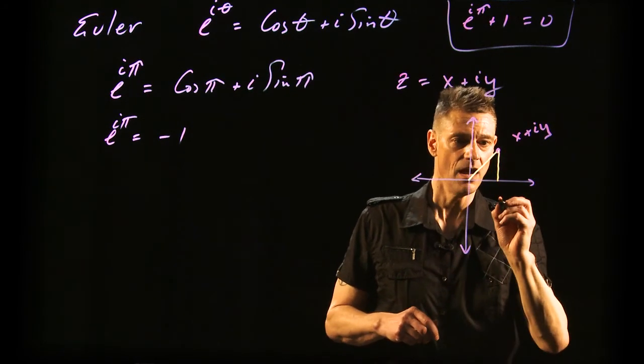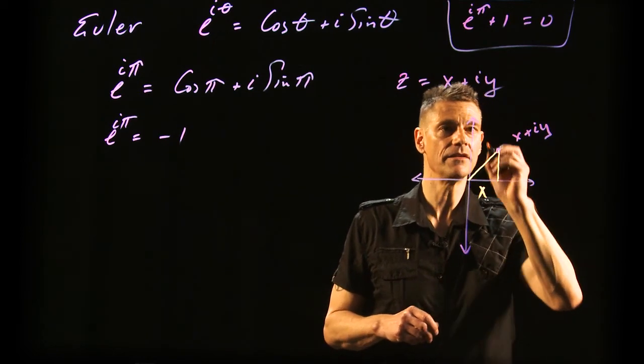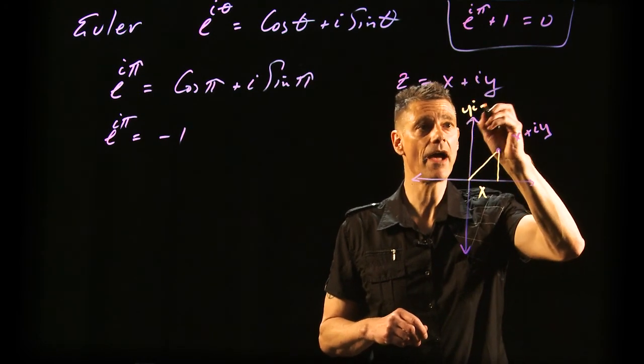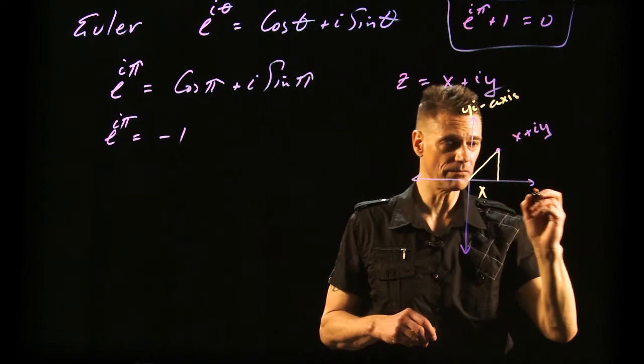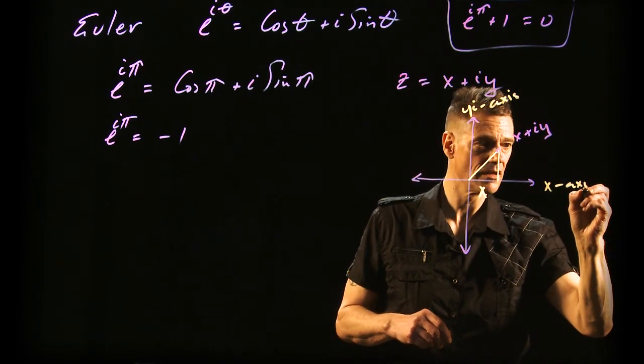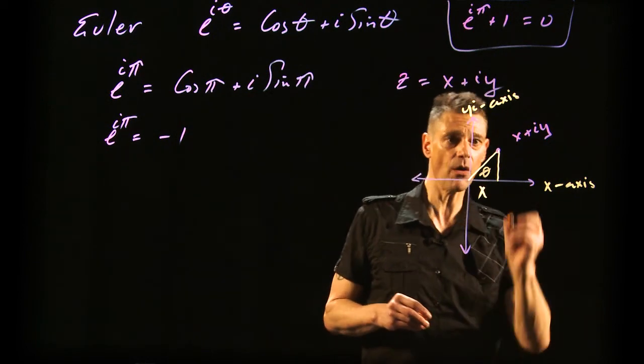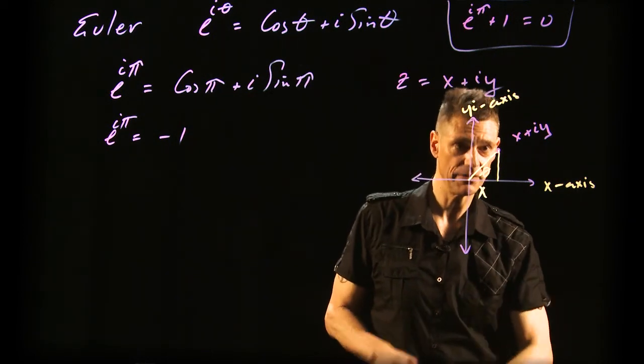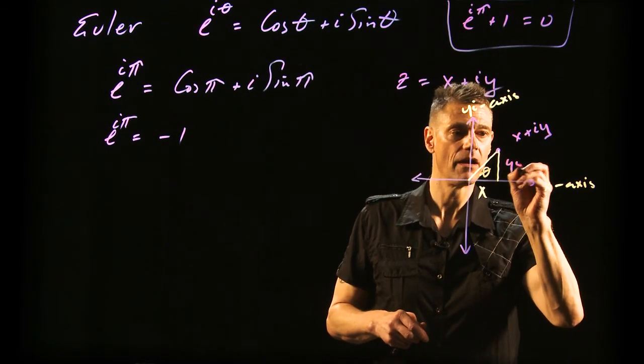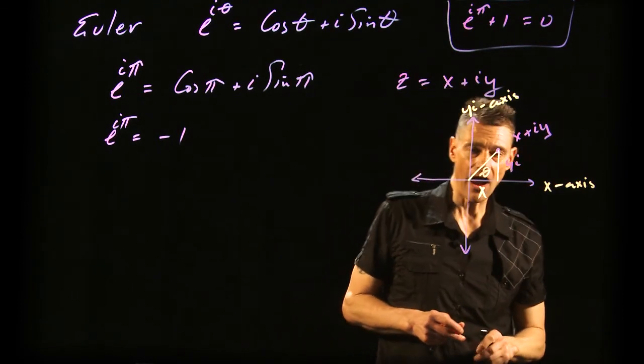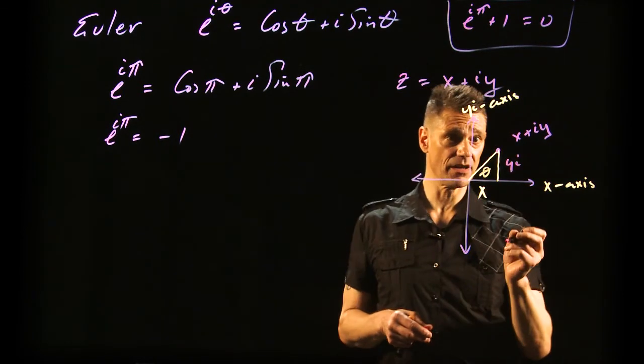Here is the x-coordinate. This is the yi axis. Because we're in a complex plane, here's the x-axis. Here's some angle θ. And this would be yi.